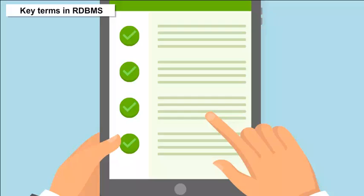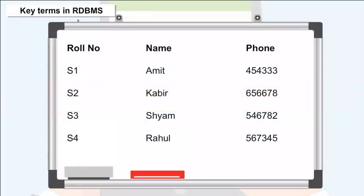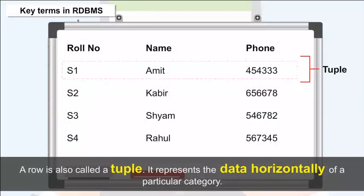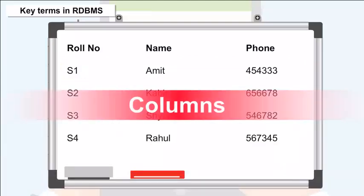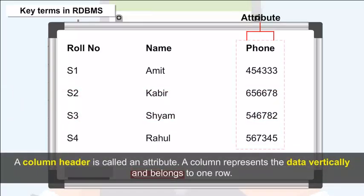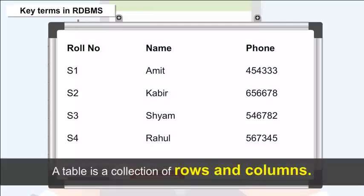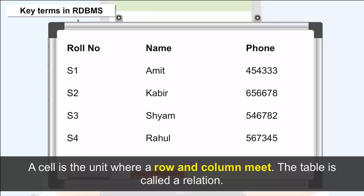Key Terms in RDBMS. Row — a row is also called a tuple. It represents the data horizontally of a particular category. Column — a column header is called an attribute. A column represents the data vertically and belongs to one row. Table — a table is a collection of rows and columns. A cell is the unit where a row and column meet. The table is called a relation.